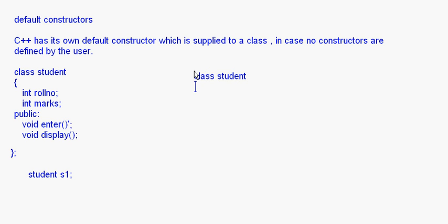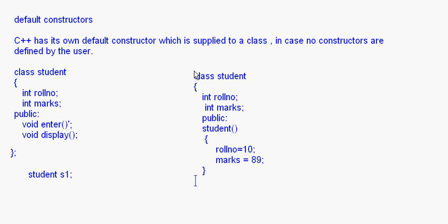But if you write your own constructor — for example, in the Student class with int rollNumber and int marks, I write Student with rollNumber equals 10 and marks equals 89 — then C++ takes back its default constructor. Once you give your own constructor, the default constructor is taken away and your constructor will be used. It is not needed because you have declared your own constructor.